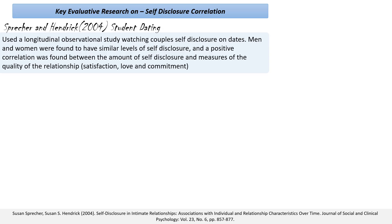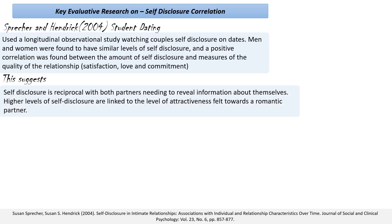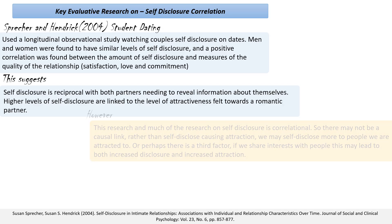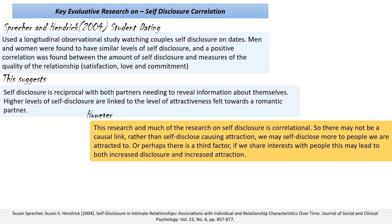What does this data suggest? It does suggest that self-disclosure is reciprocal — both men and women had similar levels of self-disclosure in order to develop the relationship. It also indicates that high levels of self-disclosure are linked to attraction toward a romantic partner, as it correlates with satisfaction, love, and commitment. However, with correlational research you can't establish causal links. It might not be that self-disclosure causes attraction; it could just as easily be the other way around — the more we're attracted to someone, the more we want to self-disclose to them.